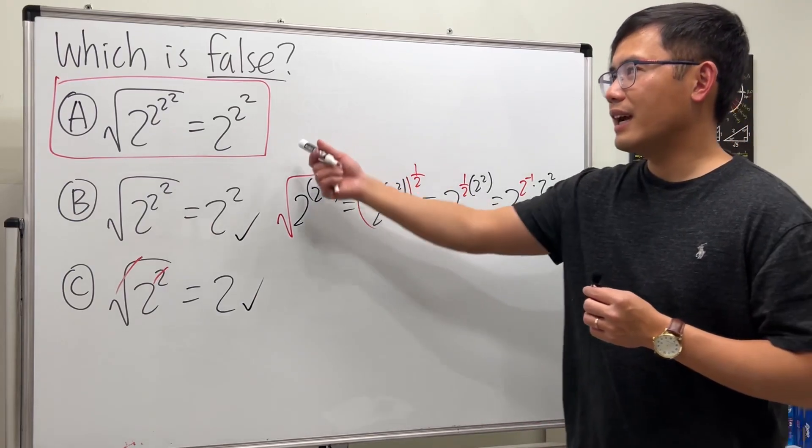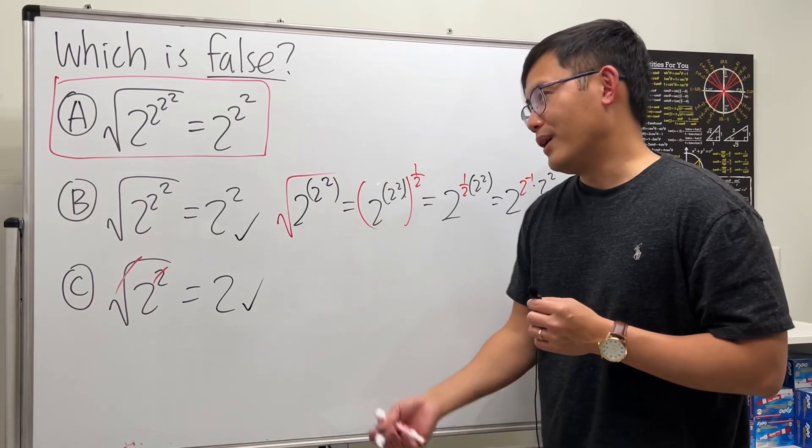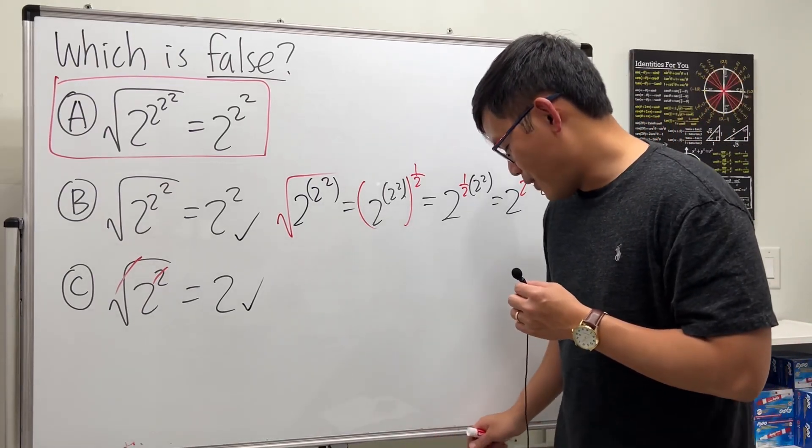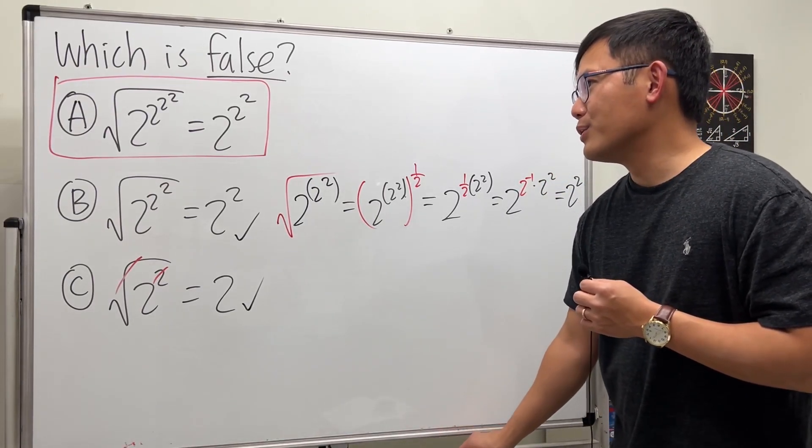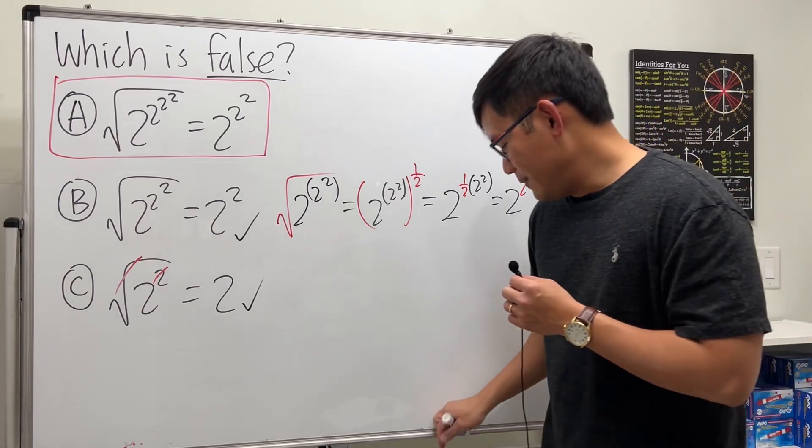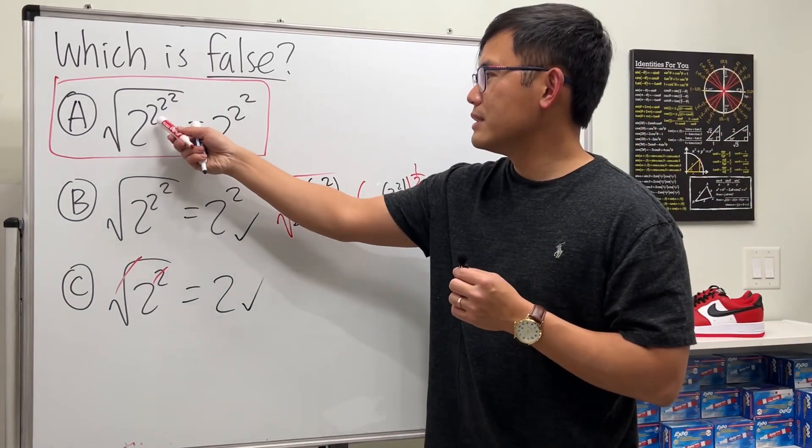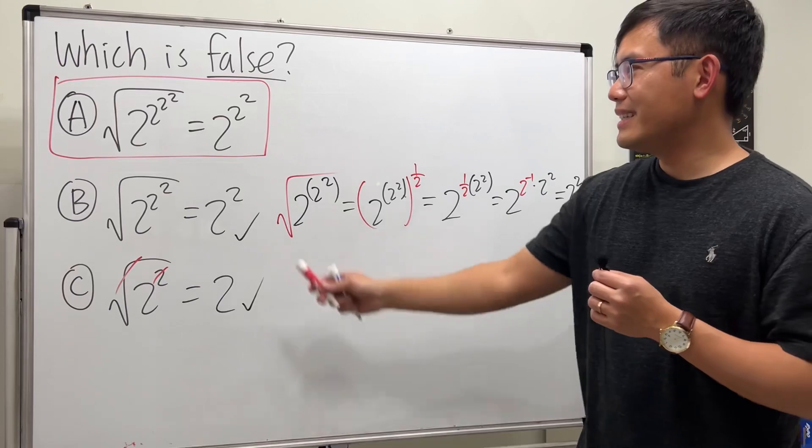It's kind of cute because originally we have four 2s in the square root, and outside we have three 2s. But it doesn't work like that, unfortunately.